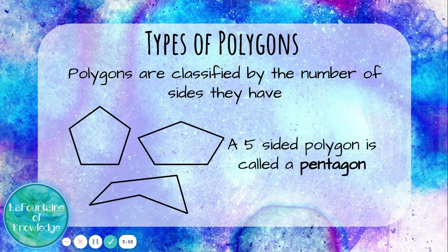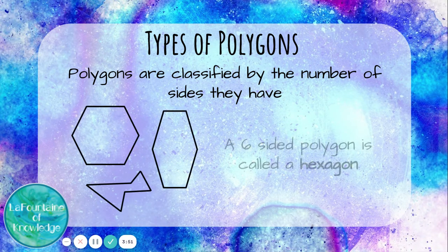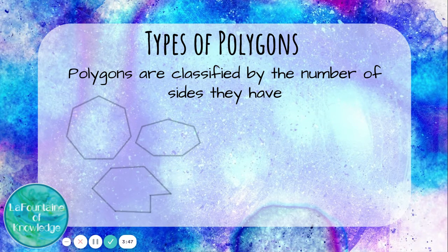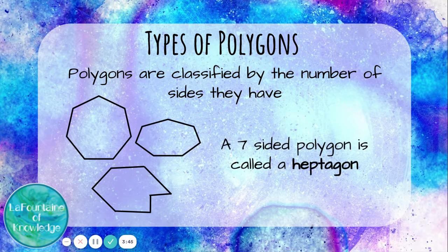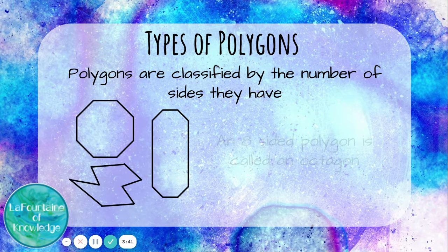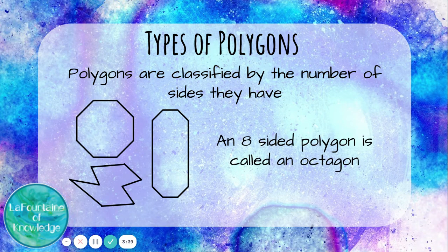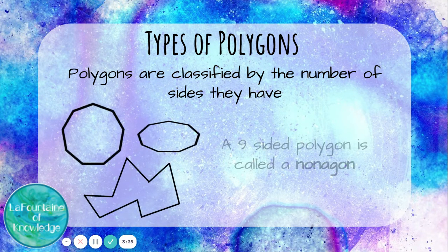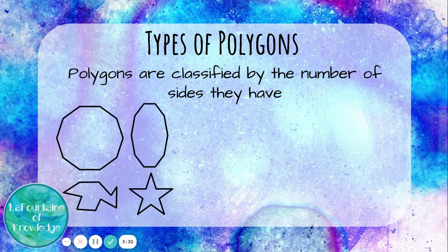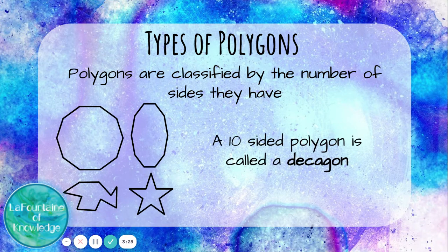A five-sided polygon is called a pentagon. A six-sided polygon is called a hexagon. A seven-sided polygon is called a heptagon. An eight-sided polygon is called an octagon. A nine-sided polygon is called a nonagon. And a ten-sided polygon is called a decagon.